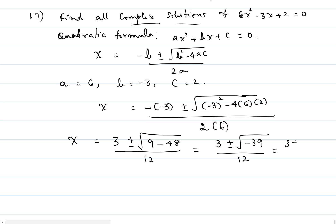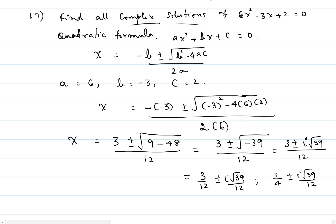That would be 3 plus or minus — because we have a negative sign inside the radical, we get i times square root of 39 — divided by 12. Written in the standard form of a complex number, that would be 3 over 12 plus or minus i square root of 39 over 12. Reducing, that gives us 1/4 plus or minus i square root of 39 over 12. So x equals 1/4 plus or minus i square root of 39 over 12.